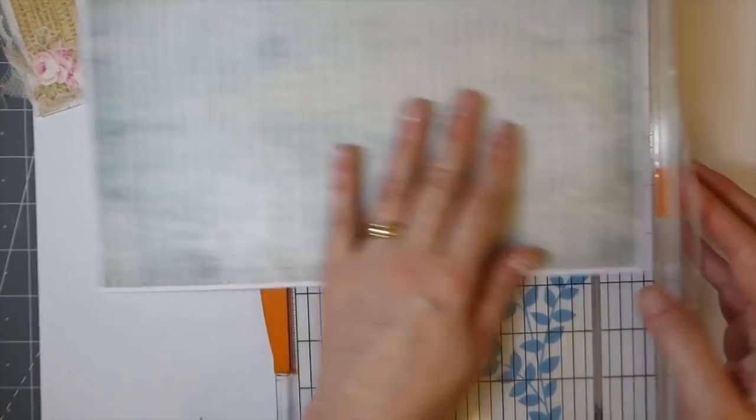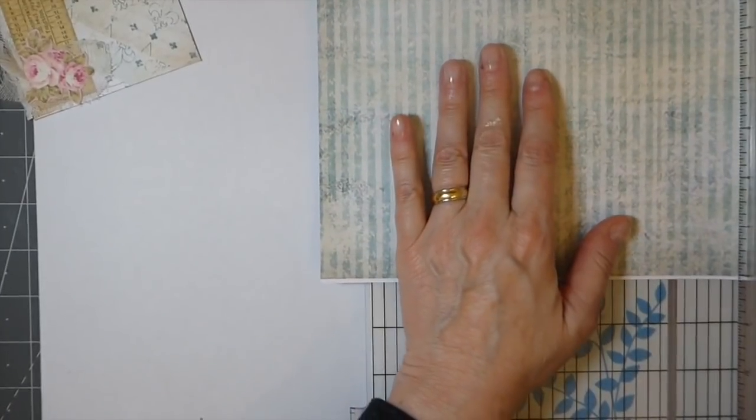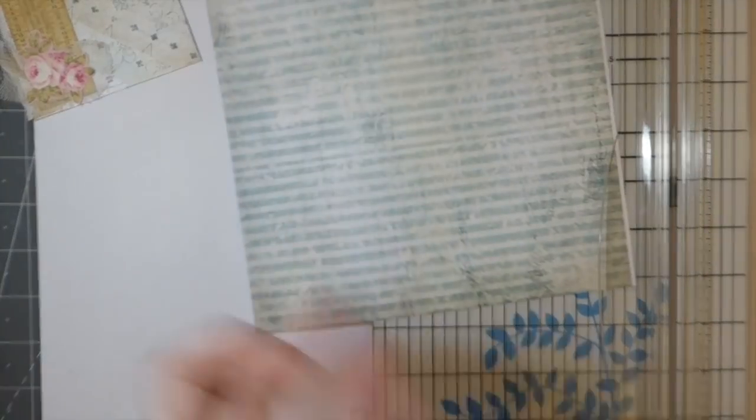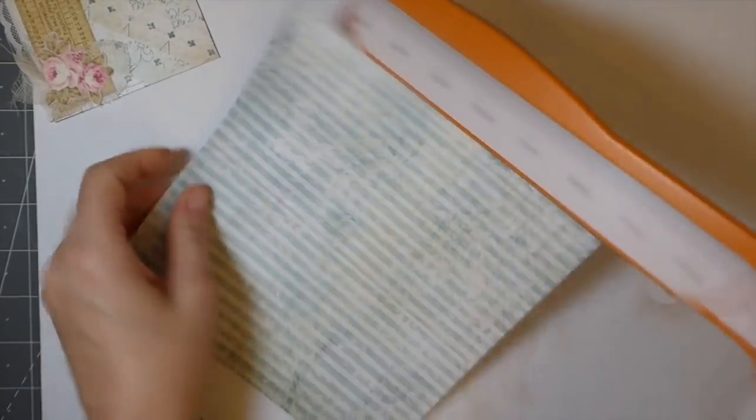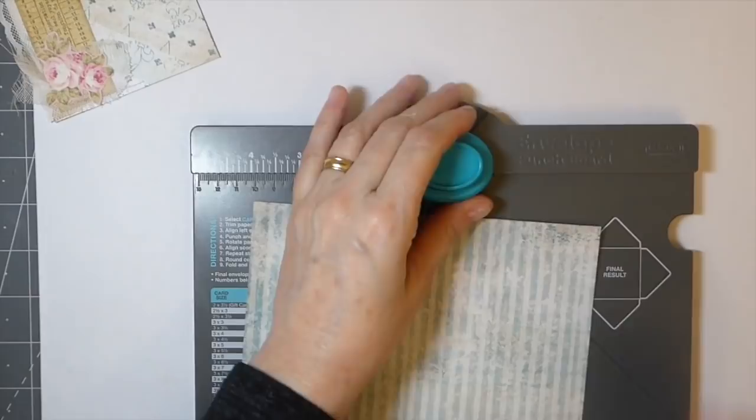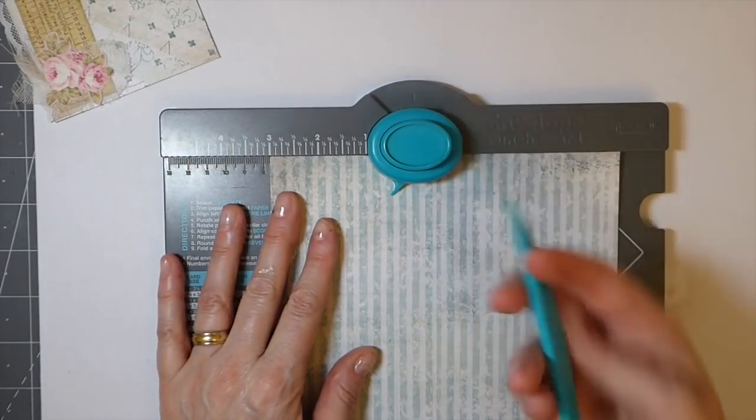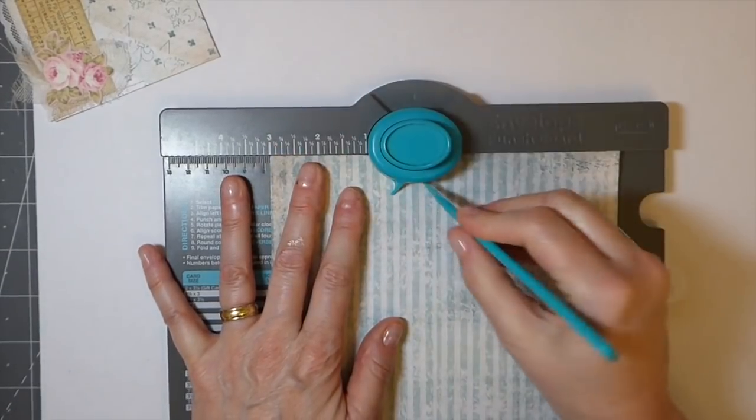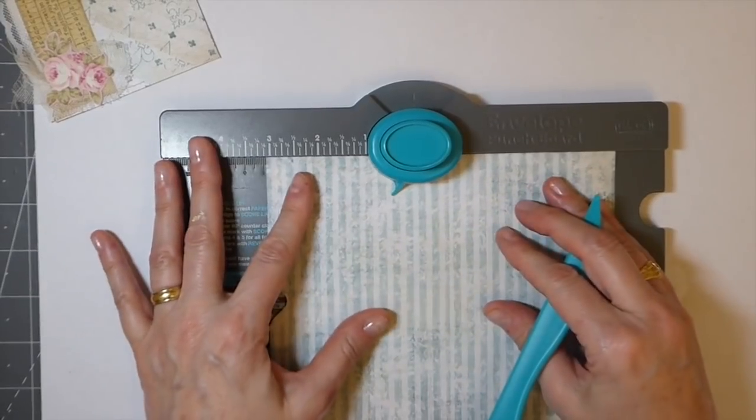Let me just go ahead and trim this off here. Then we are going to use the punch board and line it up to the three mark for the first time. If you're not familiar with the punch board, you only use this marking one time. This is such a quick project, but I do love these because we're always looking for new ideas.